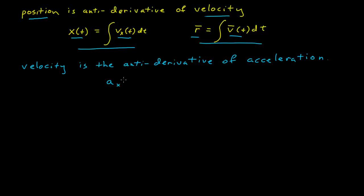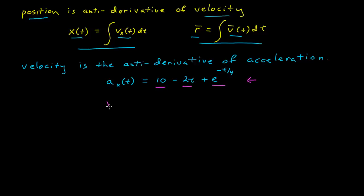Let's say we have an x-component of the acceleration as a function of time, equal to 10 minus 2t plus e to the minus t over 4. I can't imagine any physical system that would have this acceleration, so I just made that up. The first thing we want to do is find the antiderivative of this for the velocity, and to do that I need the antiderivative of each of those terms.